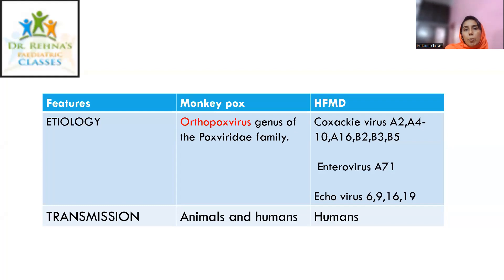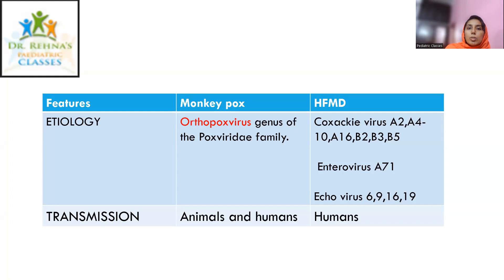Regarding etiology: monkeypox disease is caused by an orthopoxvirus of the poxviridae family, whereas hand foot mouth disease is caused by coxsackievirus A2, A4–A10, A16, B2, B3, B5, and also enterovirus A71, echovirus 6, 9, 16, 19, etc. So the etiology itself is different — this is for theoretical knowledge.